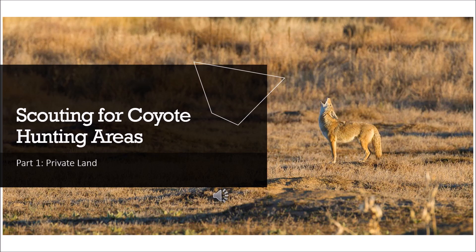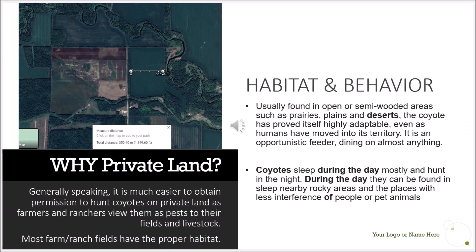Part number one is private land. First and foremost, let's touch on the habitat and behavior of a coyote. What do all animals need to survive and thrive in any given area? They need food, water, and shelter. If we can find those three things, no matter what type of game animal you're looking for, they're likely to be in that area.